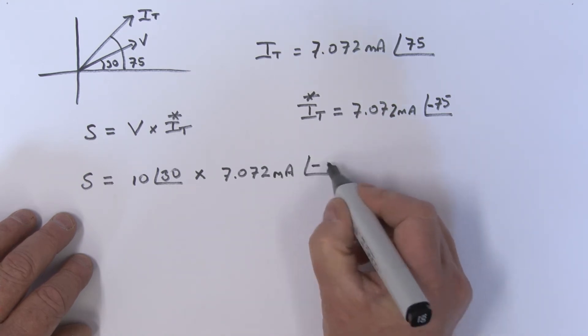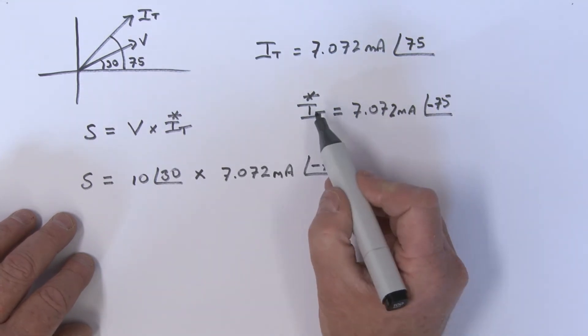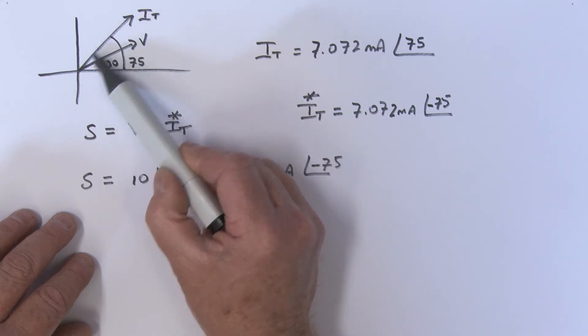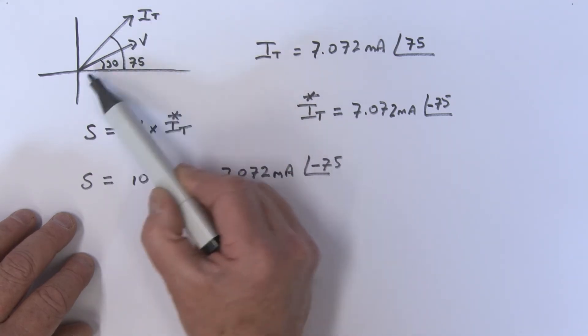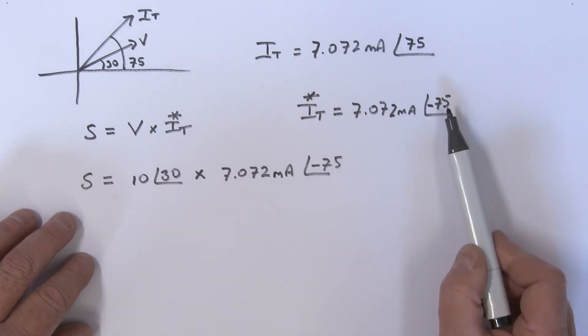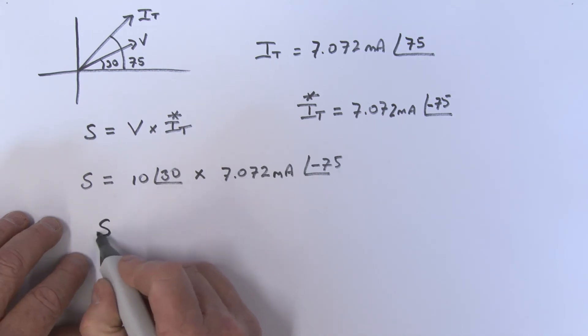Now remember, the reason for taking that complex conjugate was so that we're reflecting what the angle difference between this current IT and this voltage V. Okay, and so that's why we did that. So continuing this a little bit further, we have that this apparent power is really equal to...